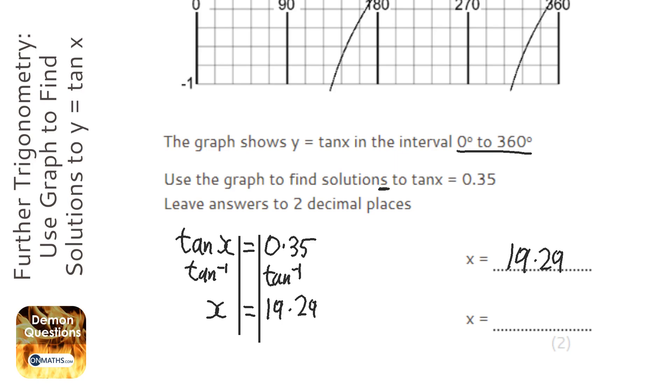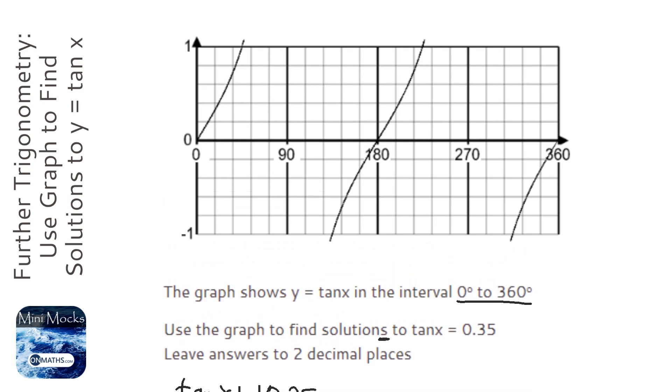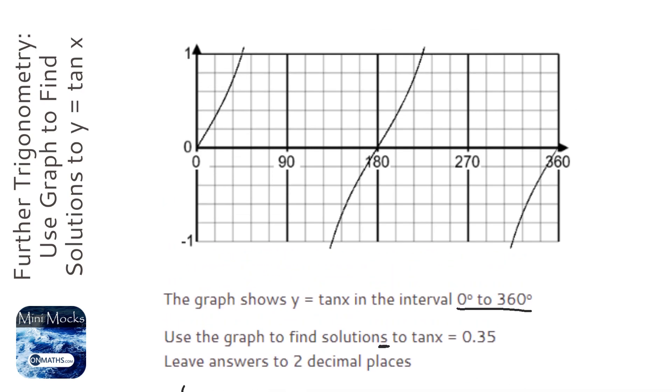So we need to sketch a graph, and actually one's given to us in the question. What we do is draw a line across from roughly 0.35—it doesn't matter if you're not that accurate with it, roughly there—and we draw a line down.